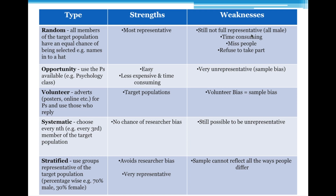Think about it from the researcher's perspective — random sampling is quite involved and time-consuming, taking a lot of effort, which could be seen as a negative. You could also end up missing people off your list. If your target population is a county or a country, it's going to be very hard to accurately get a list of everyone.